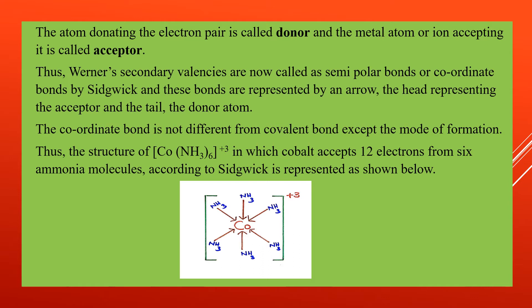The secondary valences proposed by Werner are now called coordinate bonds or semi-polar bonds by Sidgwick. These bonds are represented using arrows, where the head of the arrow represents the acceptor and the tail represents the donor atom. Importantly, the coordinate bond is not different from a covalent bond — they differ only in their mode of formation.